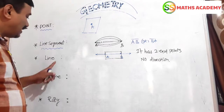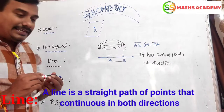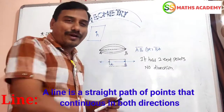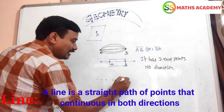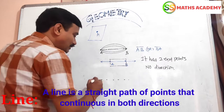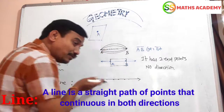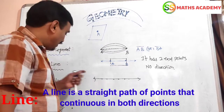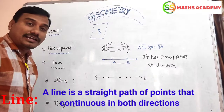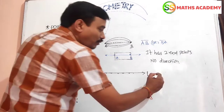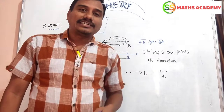Now we are going to discuss what is a line. A line is a straight path of points. It extends in both directions endlessly. The name of the line is L. We denote it as line L. It extends in both directions endlessly — that is called a line.